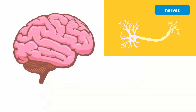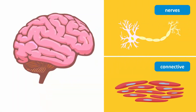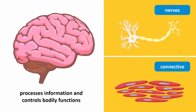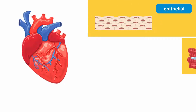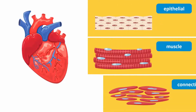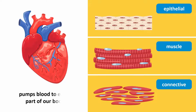For example, our brain is an organ that is made up of nervous and connective tissue. Collectively, these tissues work together to help the brain process information and control bodily functions. Similarly, the heart is an organ that consists of epithelial, muscle, and connective tissues, so that it can pump blood to every part of our body.